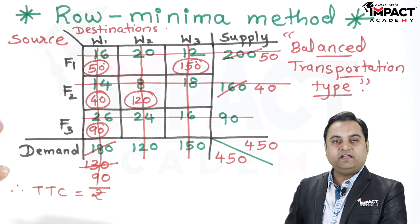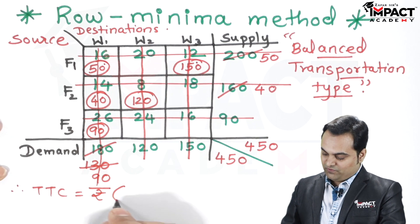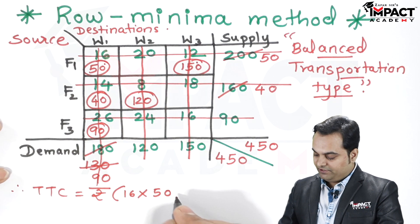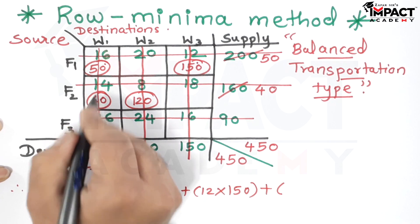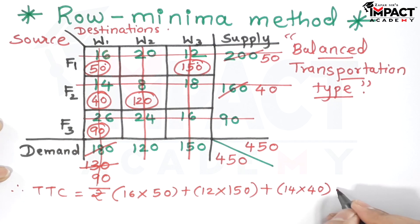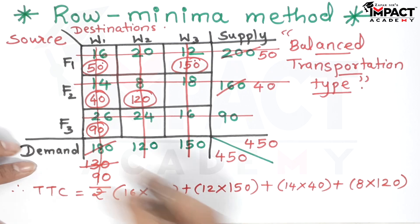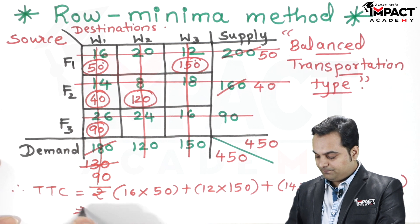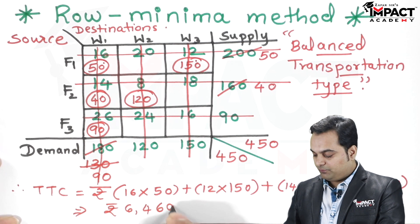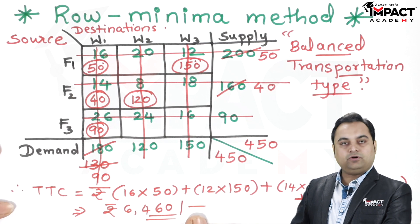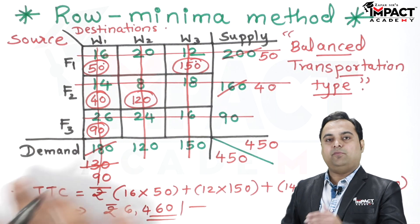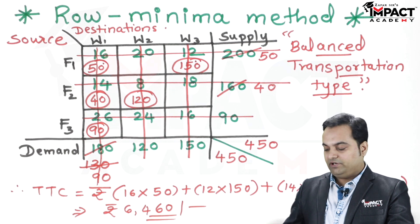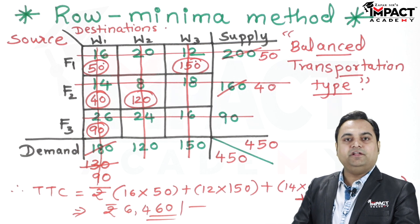The total transportation cost is calculated by multiplying the unit cost with the allocated value for each occupied cell. We have 16 × 50, 12 × 150, 8 × 120, 14 × 40, and 26 × 90. Adding all these values, the total transportation cost comes out to be 6,460 rupees. If values are given in thousands, multiply the final answer by 1,000. That was the Row Minima Method.